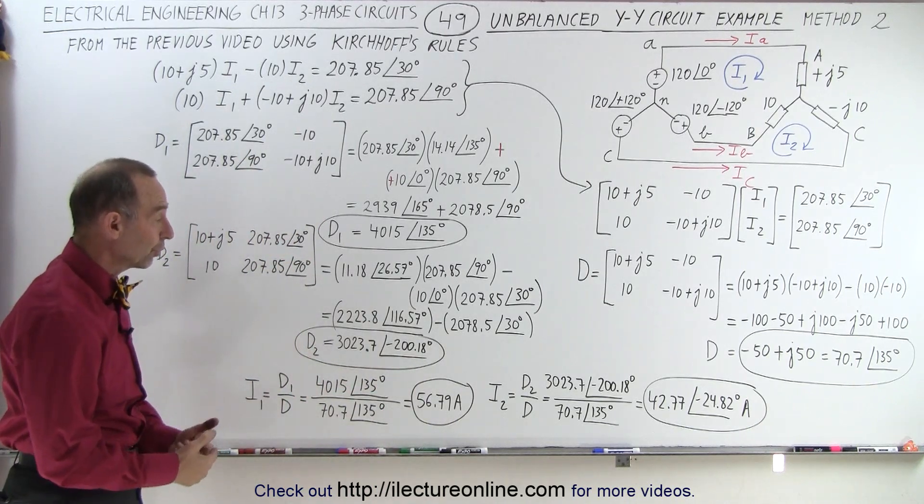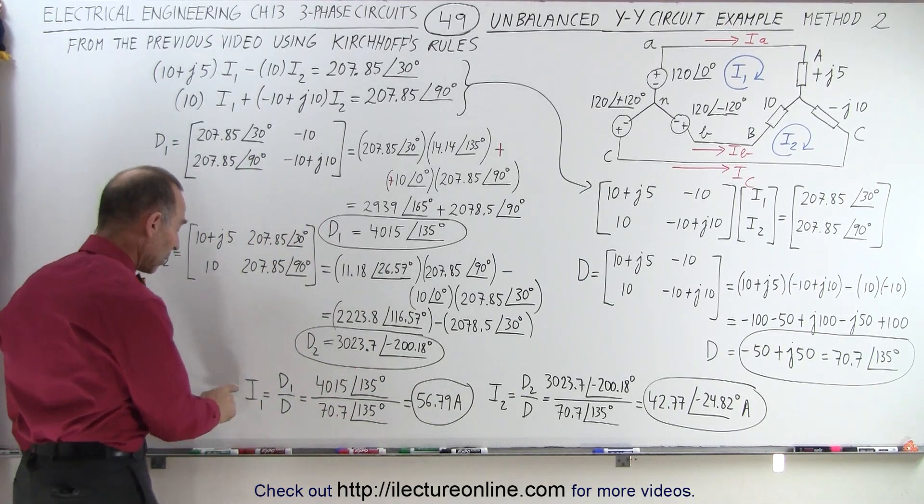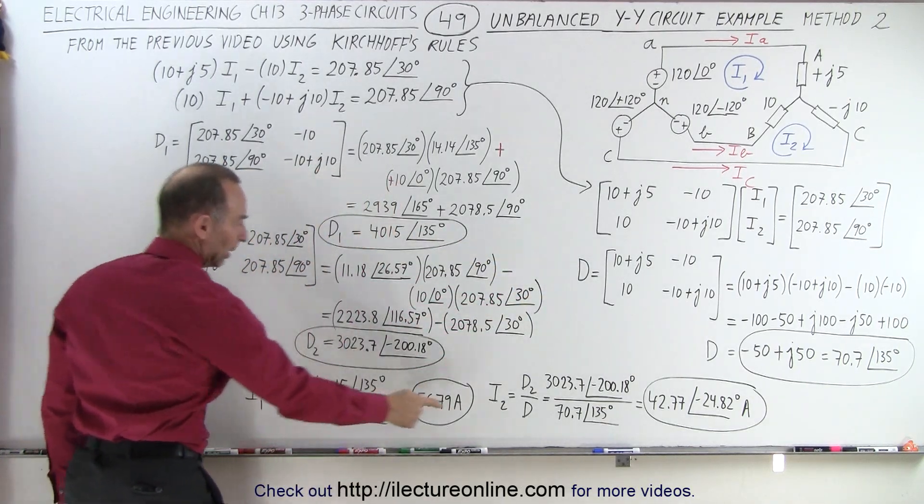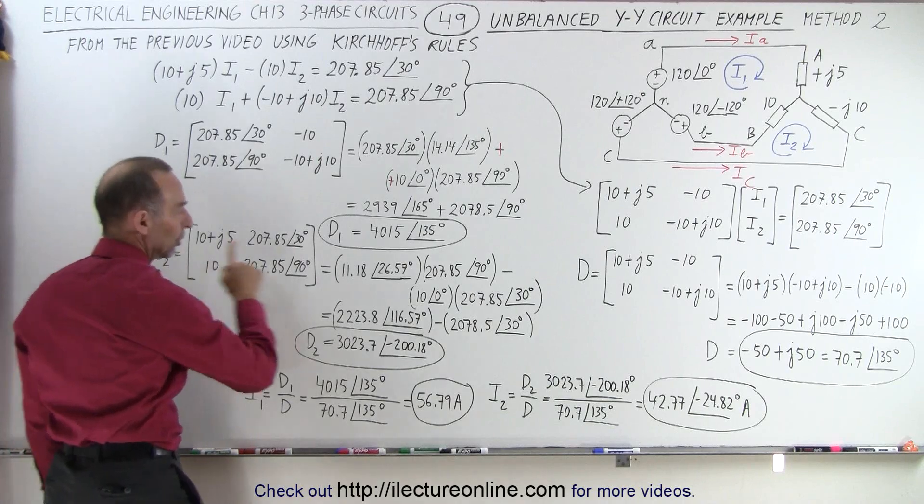Now to find the two currents, I1 and I2, I1 is defined by D1 divided by D and I2 is defined as D2 divided by D.